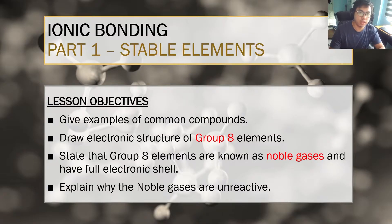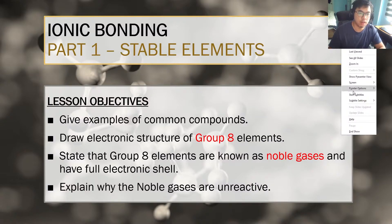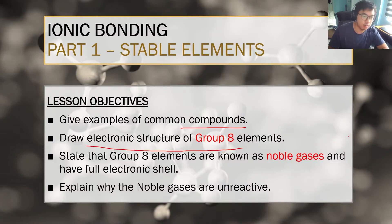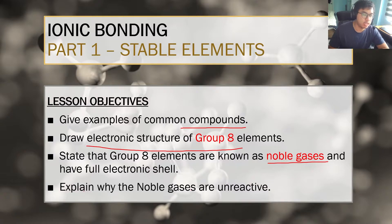Before we look at ions, there are a couple of things that you need to know. Firstly, you need to know about compounds. You already learned this before but I'm going to recap it again. You're also going to need to be able to draw the electronic structure of group 8 elements, and then we're going to look at noble gases, which are basically another name for group 8 elements, and why noble gases are unreactive.